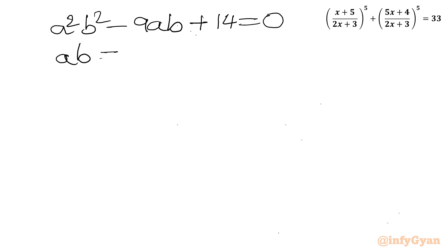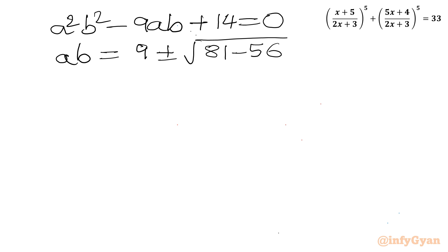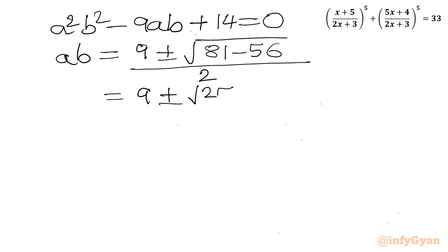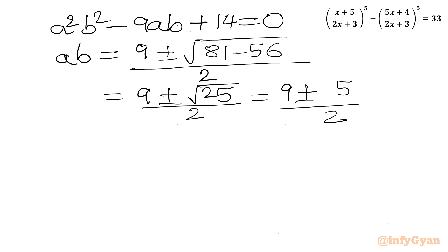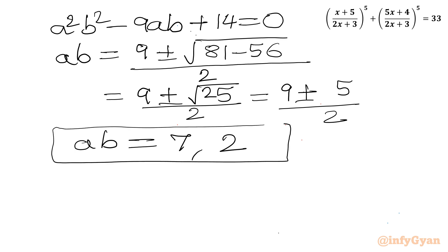Applying the quadratic formula to a²b² - 9ab + 14 = 0: ab = (9 ± √(81 - 56)) / 2 = (9 ± √25) / 2 = (9 ± 5) / 2. With the plus sign: 14/2 = 7. With the minus sign: 4/2 = 2. So ab = 7 or ab = 2.